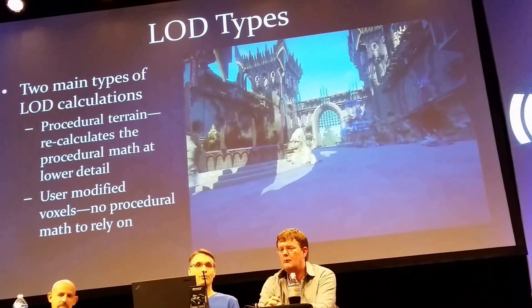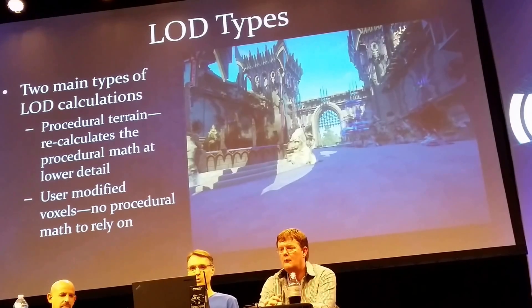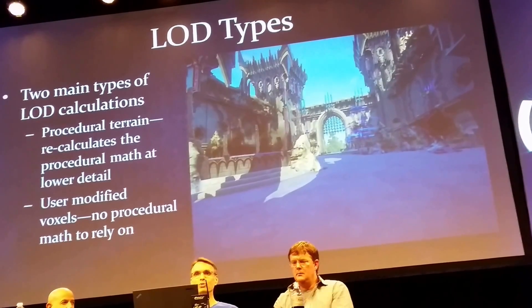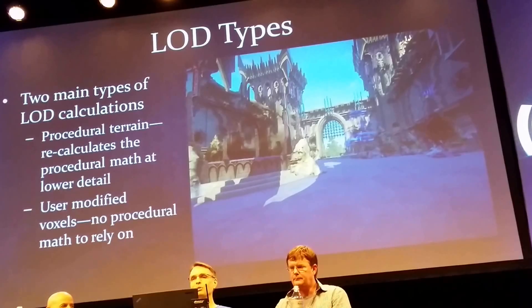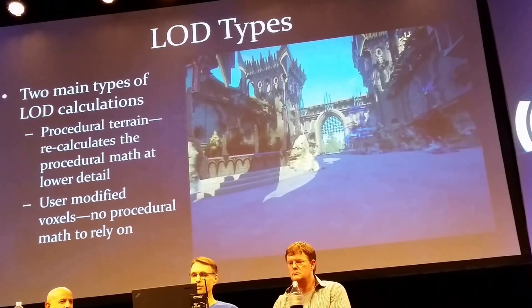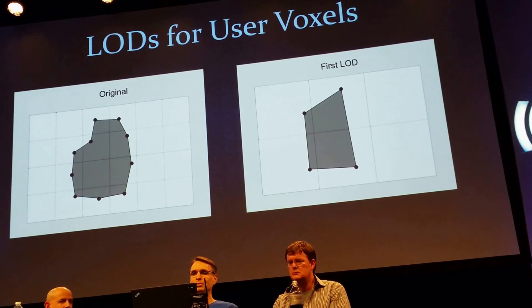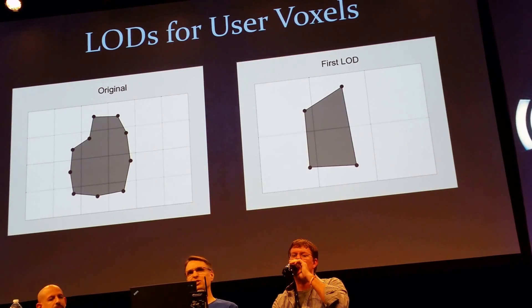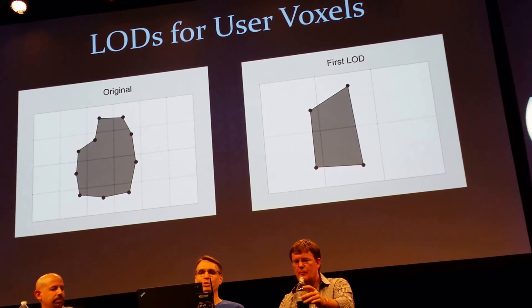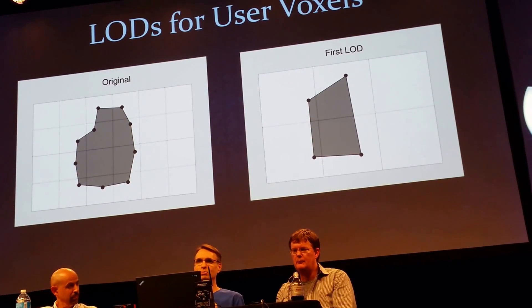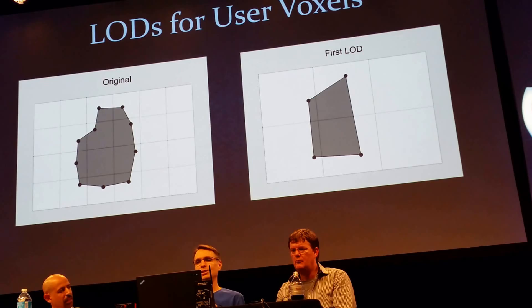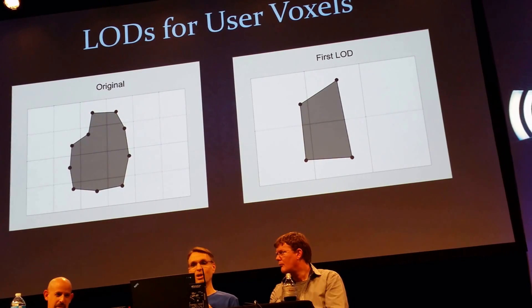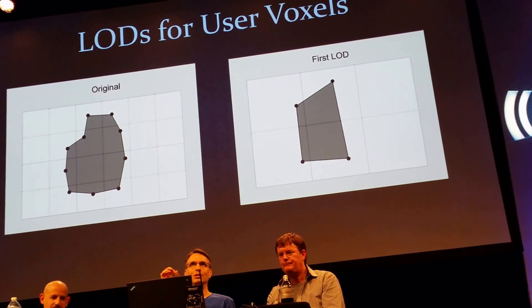The other kind is from user-modified boxes, and the level of detail for those is much more complicated. They don't have any procedural math to go back to to regenerate that information. So we actually have to take the user-modified voxels and approximate what they would look like at that lower detail level. On the left you have a voxel grid at your highest resolution — say this is the resolution you see right around you — and you have a shape you're representing. Well, let's say 8 to 10 cells out, you now need to display that same shape but at a lower resolution. The system has to make an approximation of what the original shape was, but with much less information.